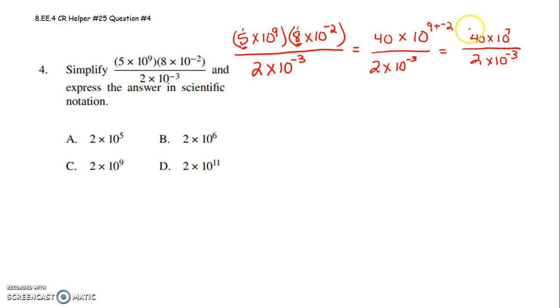I have options. I could rewrite this in scientific notation now. Maybe I'll do that. So at this point, I have 40 times 10 to the positive 7th, over 2 times 10 to the negative 3rd. So what I'm going to do is this decimal point is here.